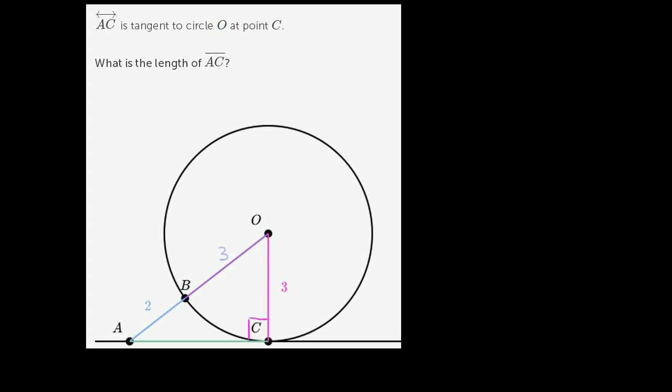And so now we can figure out that the hypotenuse of this triangle has length five. We need to figure out the length of segment AC. Let's call that x.